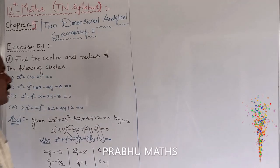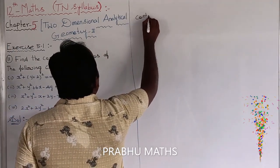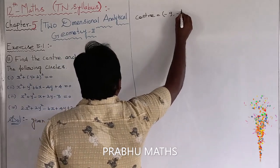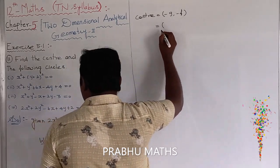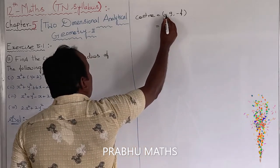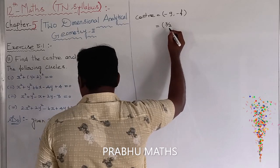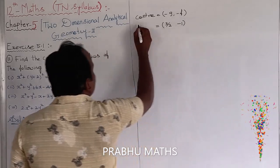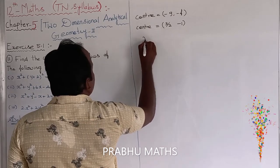The center is (minus g, minus f), which gives us (minus of minus 3 by 2, minus 1), that is (3 by 2, minus 1). So the center value is completed.